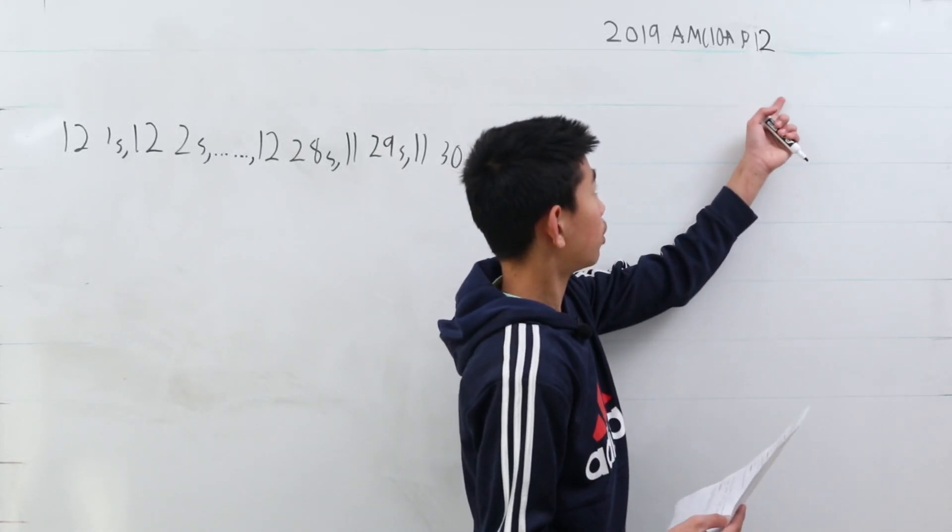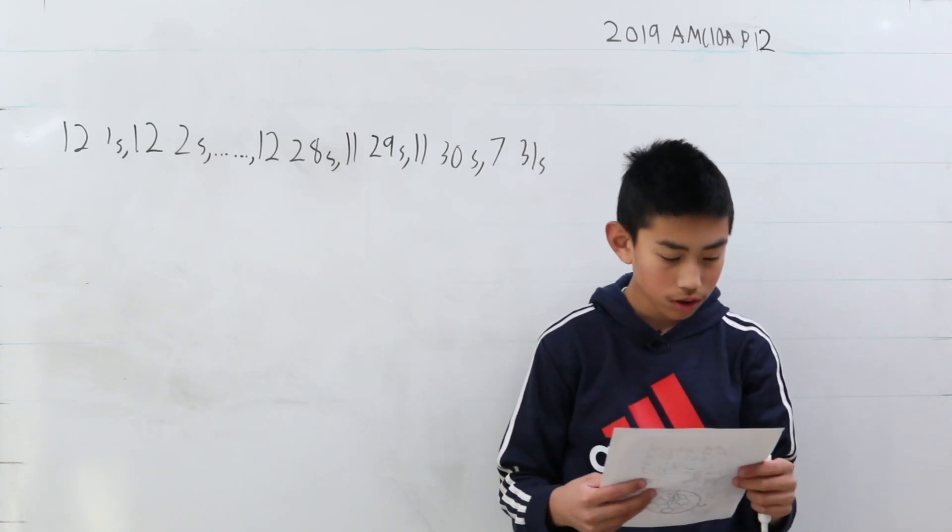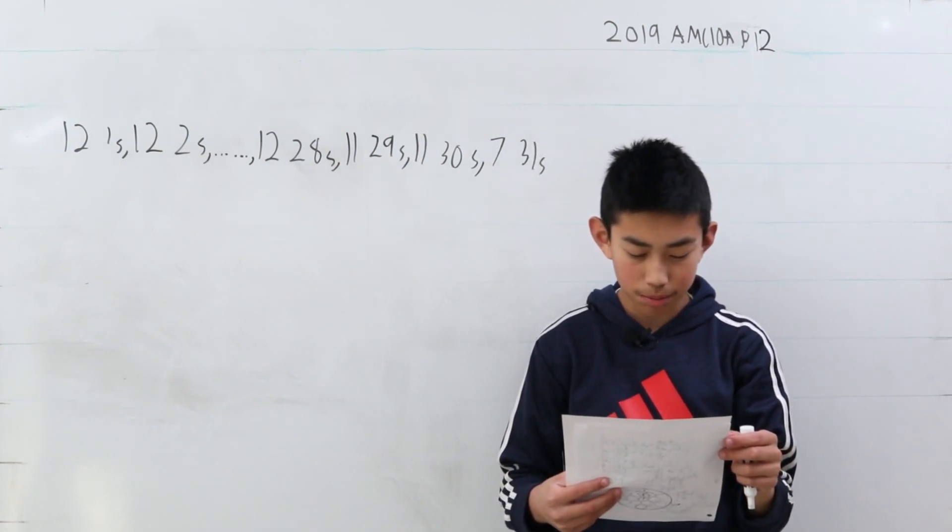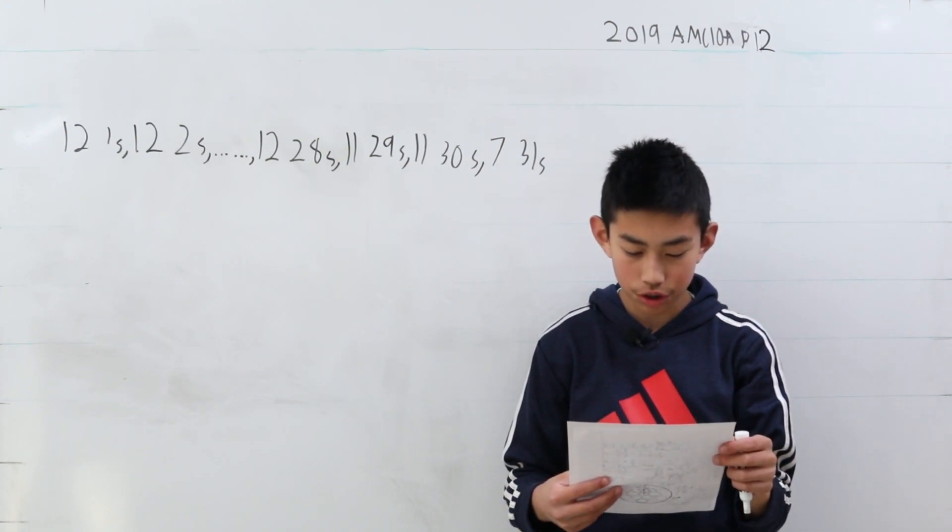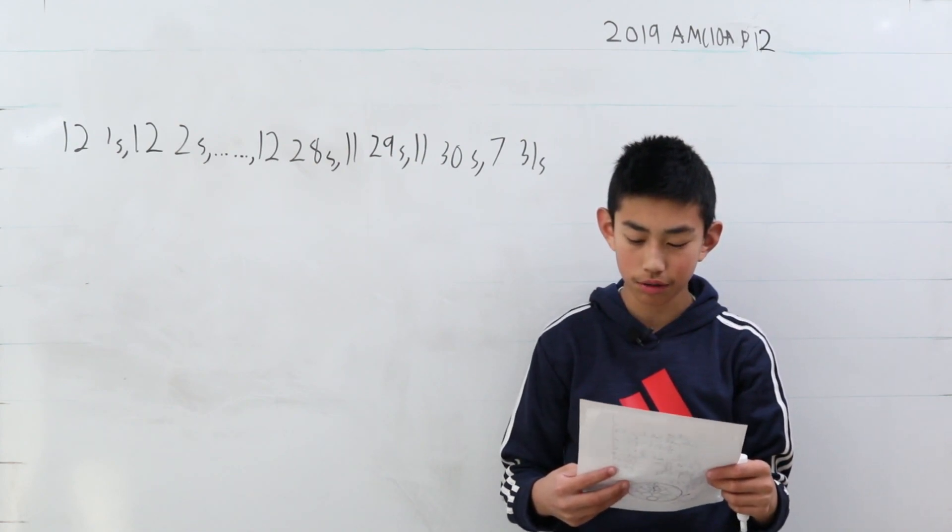We're solving problem 12 from the AMC 10A from 2019. Melanie computes the mean μ, the median m, and the modes of the 365 values that are in the dates in the months of 2019.